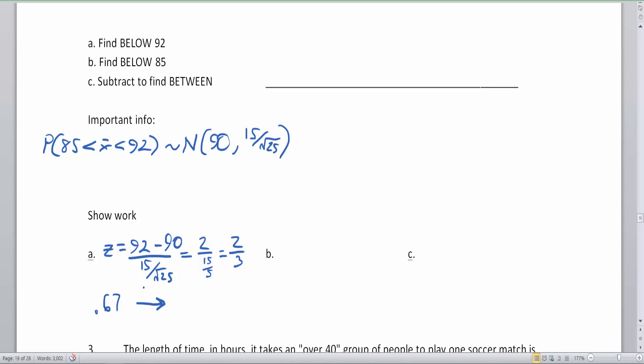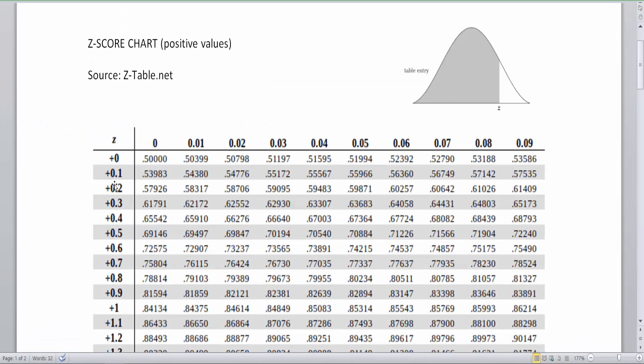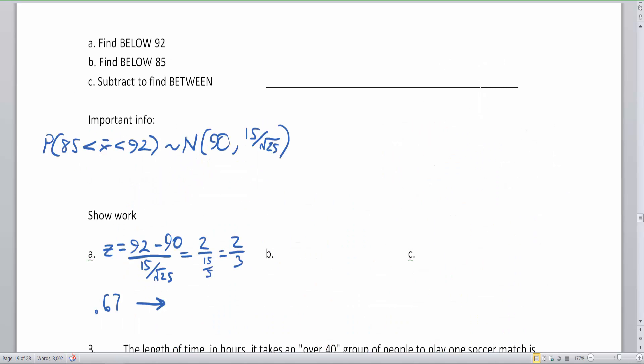So 0.67 is the value I'm going to look up on my table. Let's switch over to the z-score chart. 0.67. Well, here's the 0.6. Here's the 7. So 0.67 is 0.74857. Okay, so that gives you the percentile at that place. This is 0.74857.